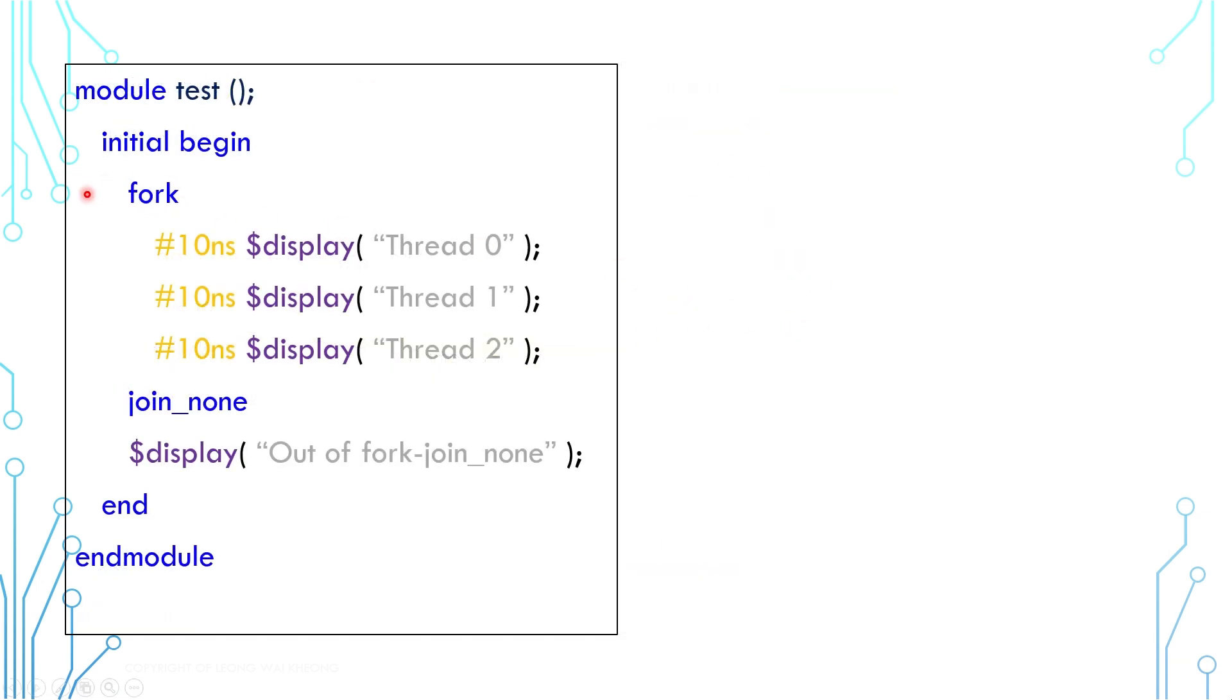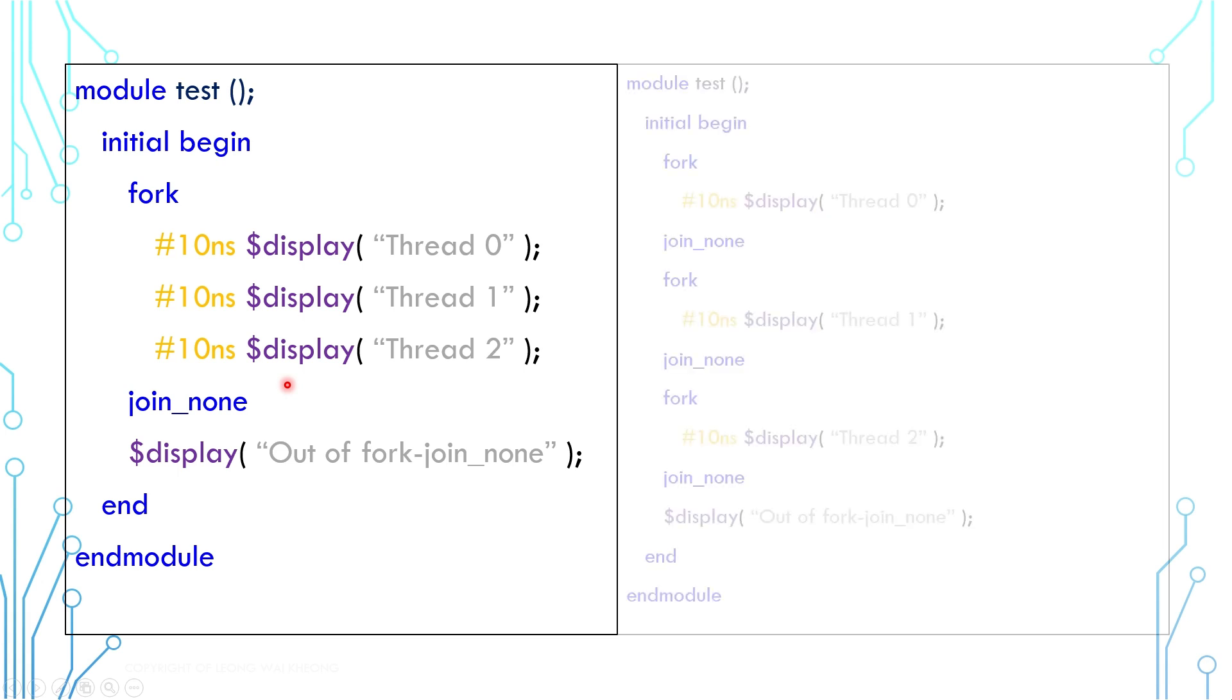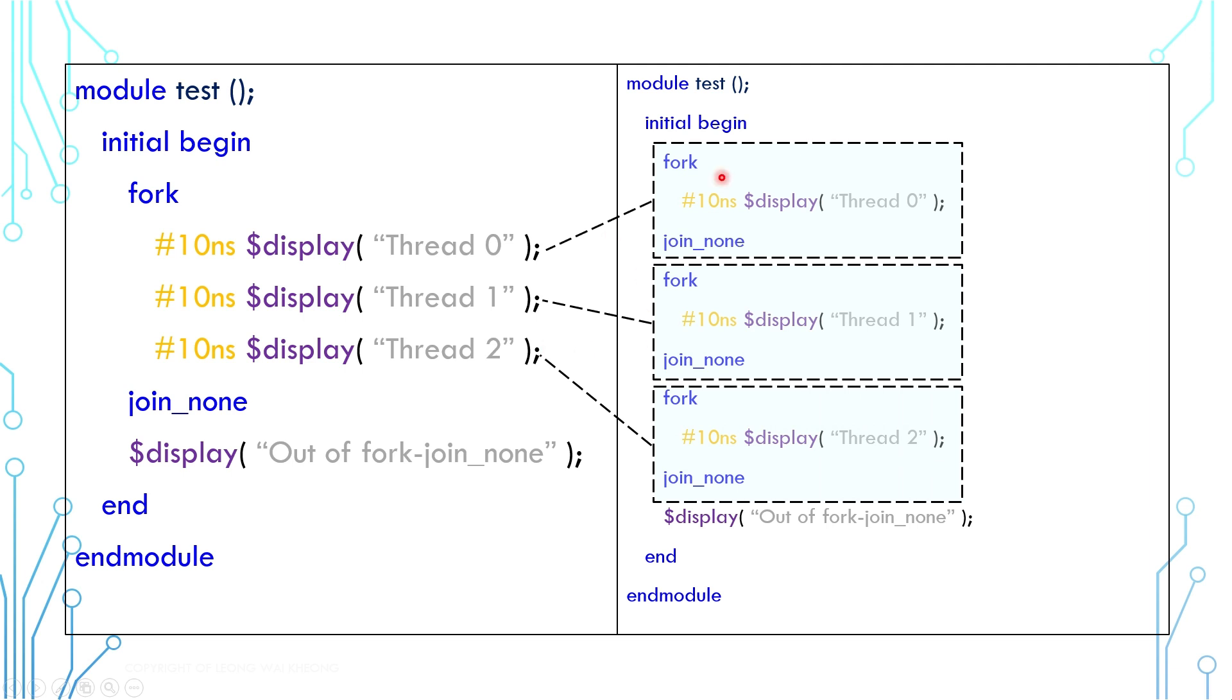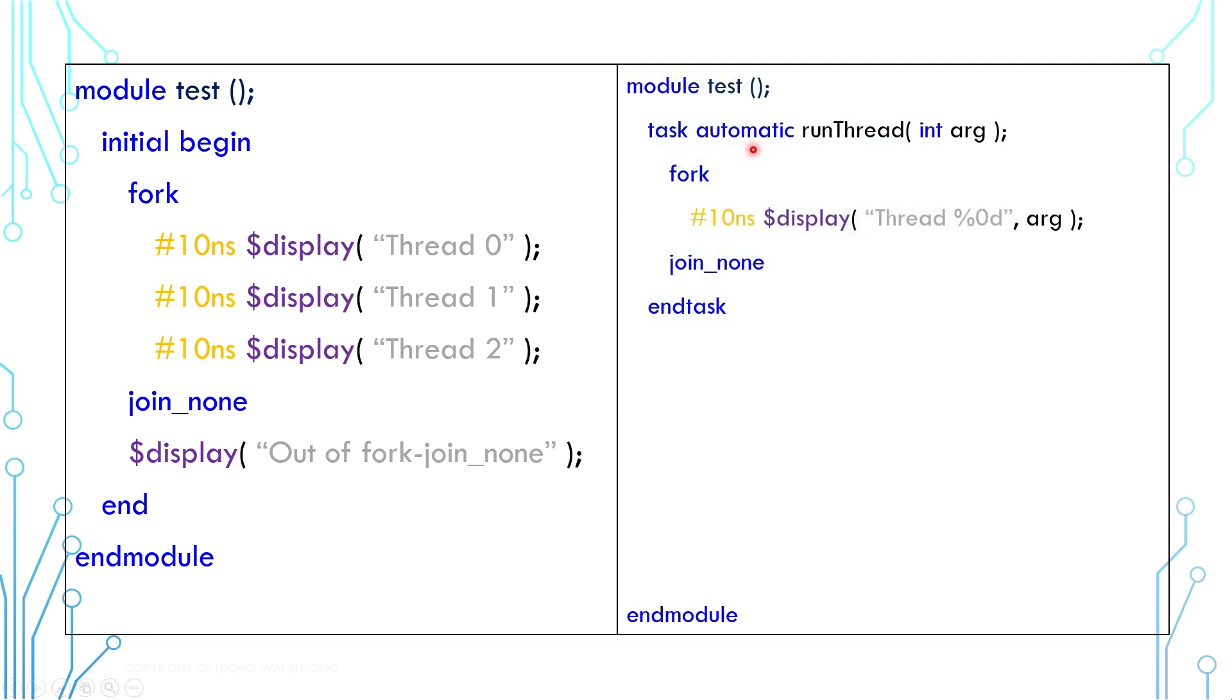Now, fork join_none has a unique capability. Looking at this example, it has three threads. Compared to the other, fork join_none is the only construct that can be written in this manner, where every thread has its own fork join_none. It may seem redundant and repetitive, but it can be further refactored. We can use a task to execute a fork join_none, and then we call the task to launch a new thread. If we refactor the task call further, we can now run any number of threads instead of the hardcoded one. This dynamic thread creation is a fork join_none construct capability.